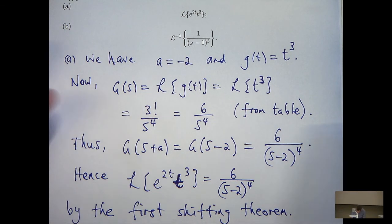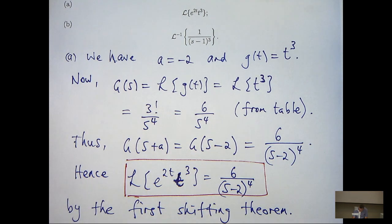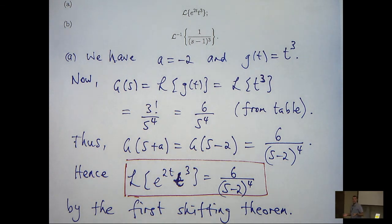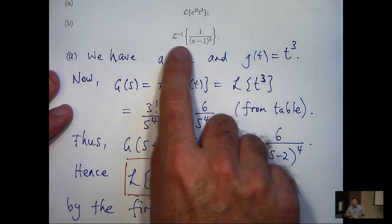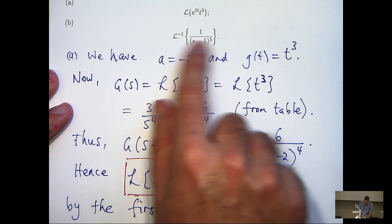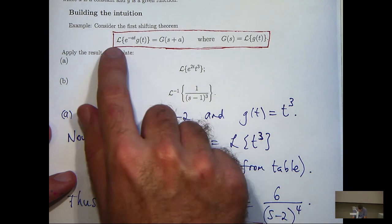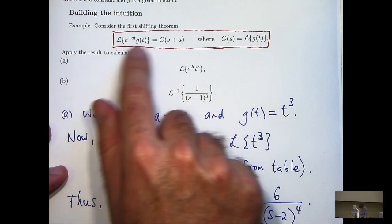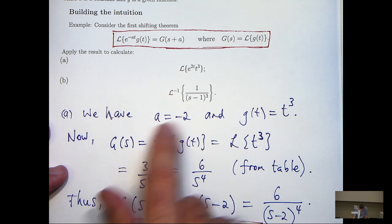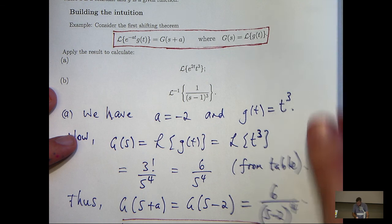You can see I've named the result and the theorem that I'm using to make my argument absolutely clear. That's part A done. Now let's have a look at part B, where we're asked to use the first shifting theorem to calculate the inverse Laplace transform. If we apply the inverse Laplace transform to both sides of the first shifting theorem, we can use that to calculate the example in part B.